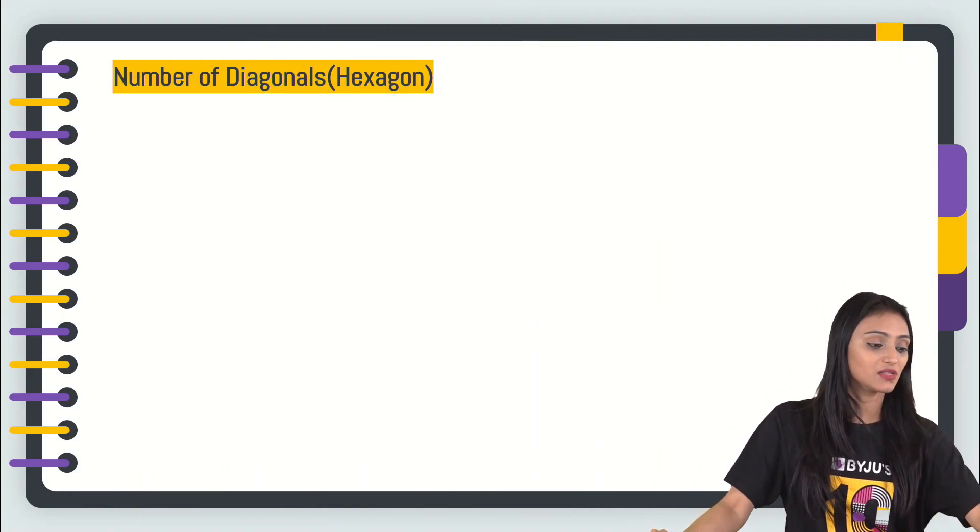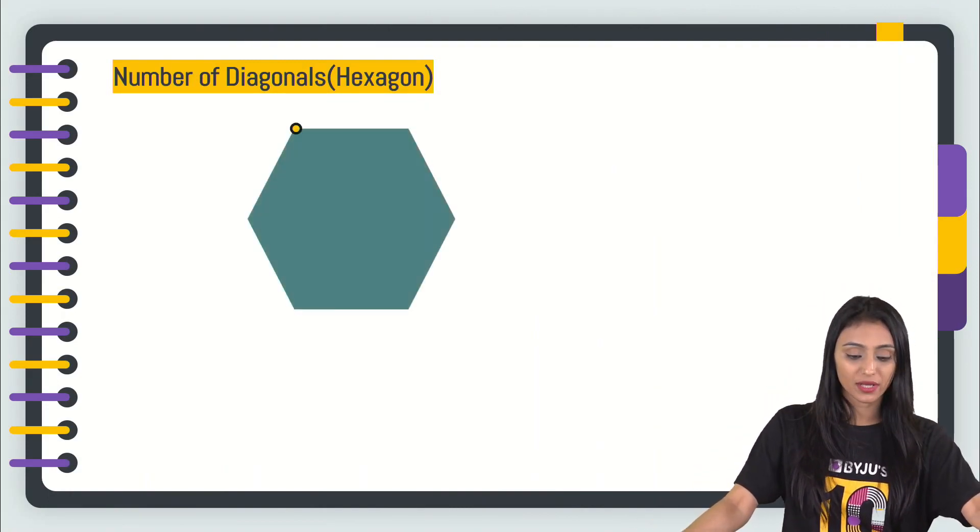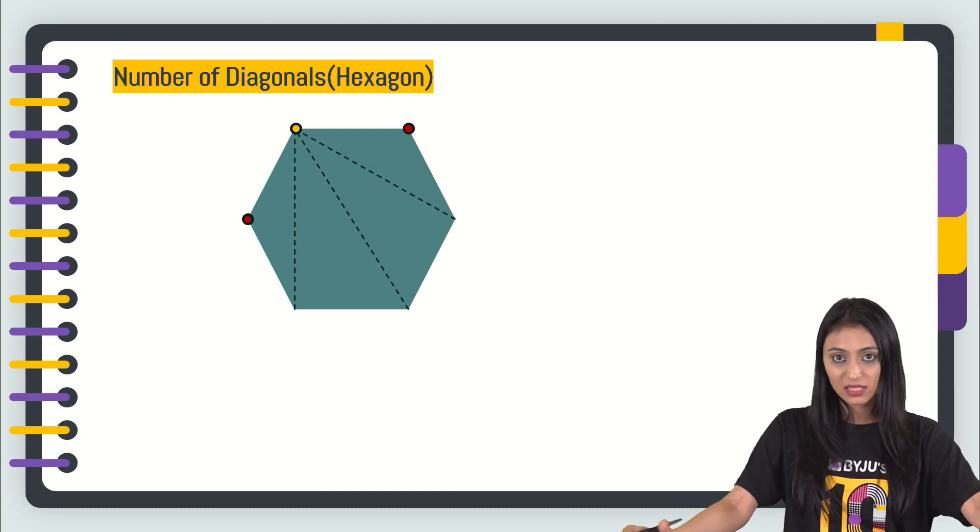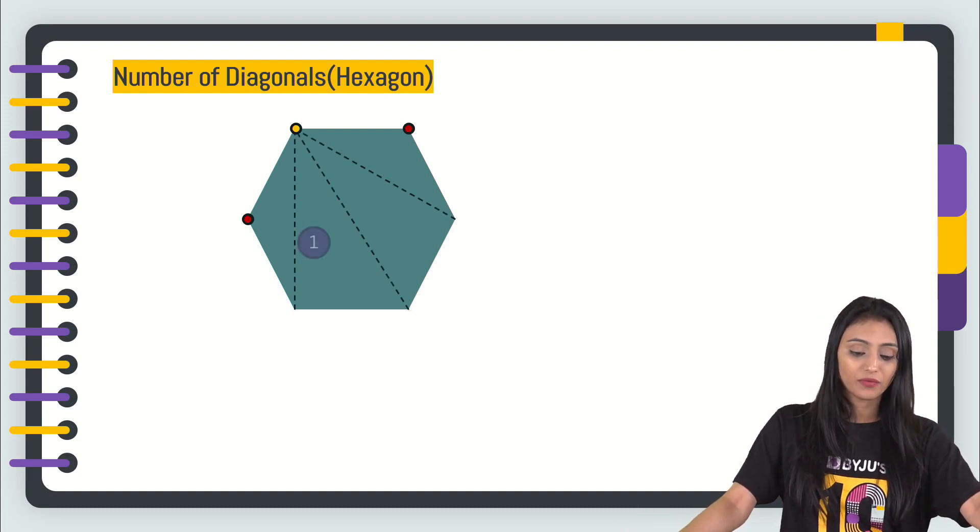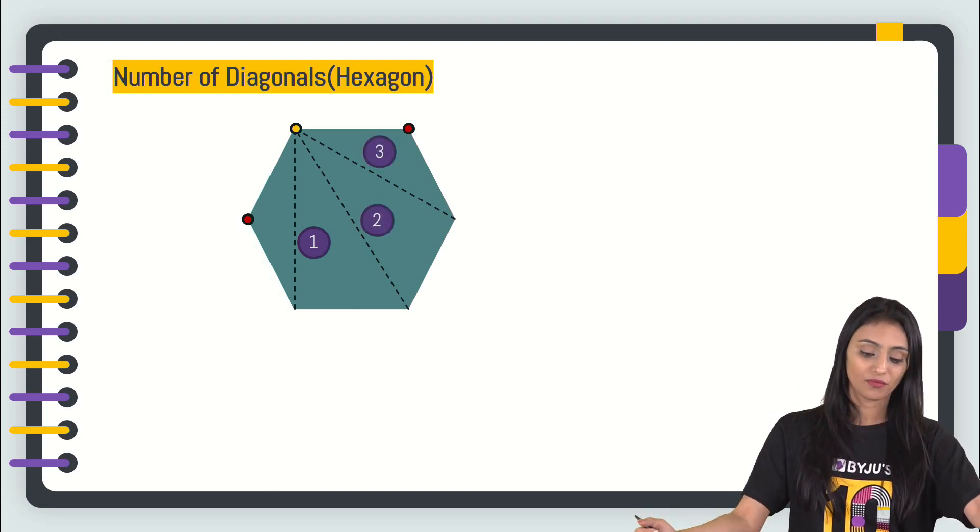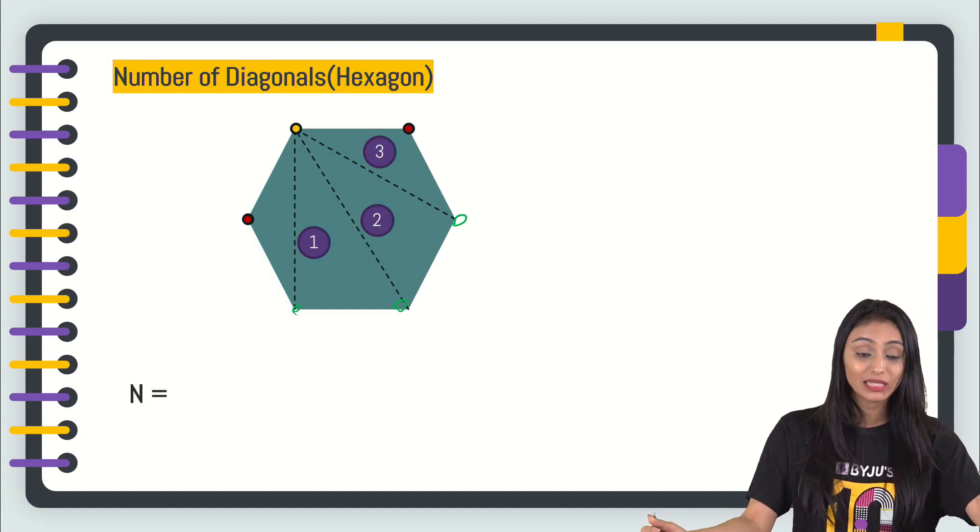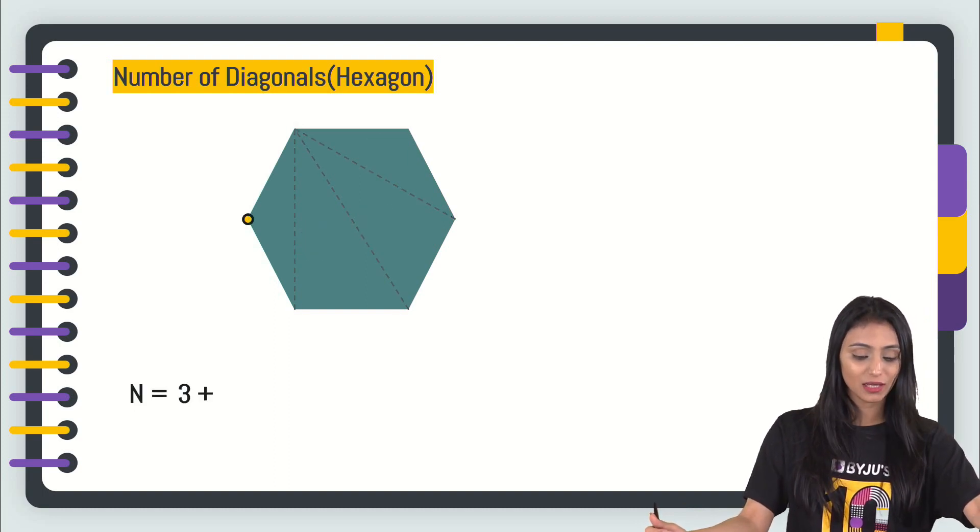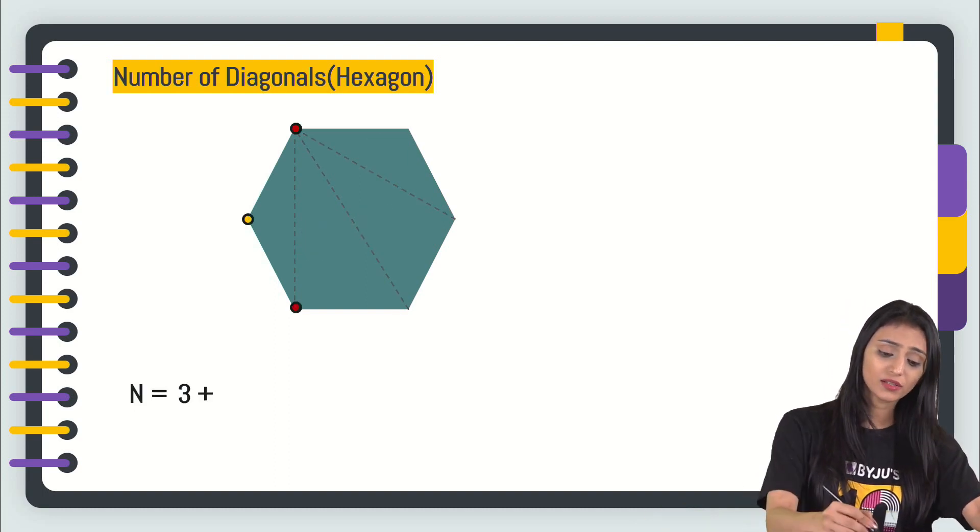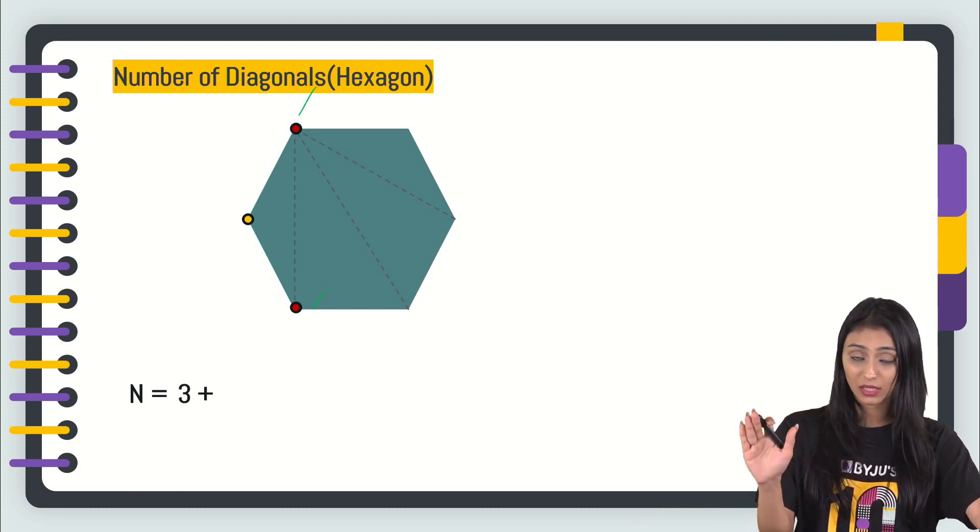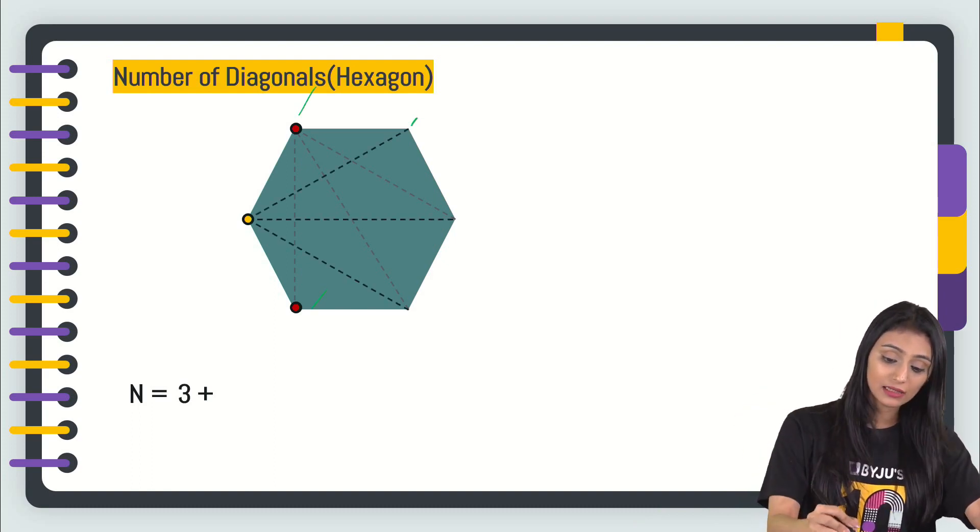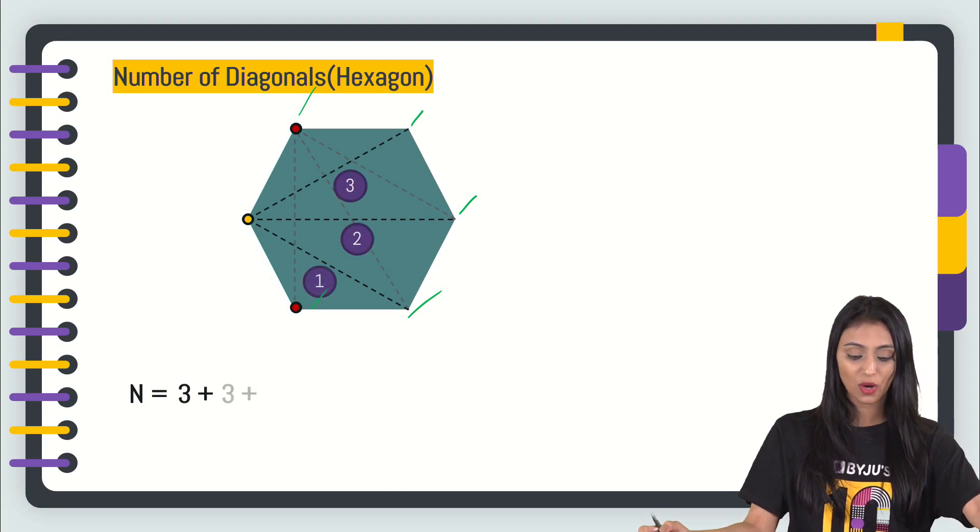Now we will check the number of diagonals for a hexagon. This is a vertex and these are the two consecutive vertices. We won't count the diagonals from the consecutive ones. We are considering the non-consecutive ones. Once I join this vertex to these three non-consecutive vertices, I get three diagonals. Now let's consider another vertex. Here, these are the two consecutive ones. We will not consider them. We will consider these three non-consecutive ones. So again, there are three diagonals possible.